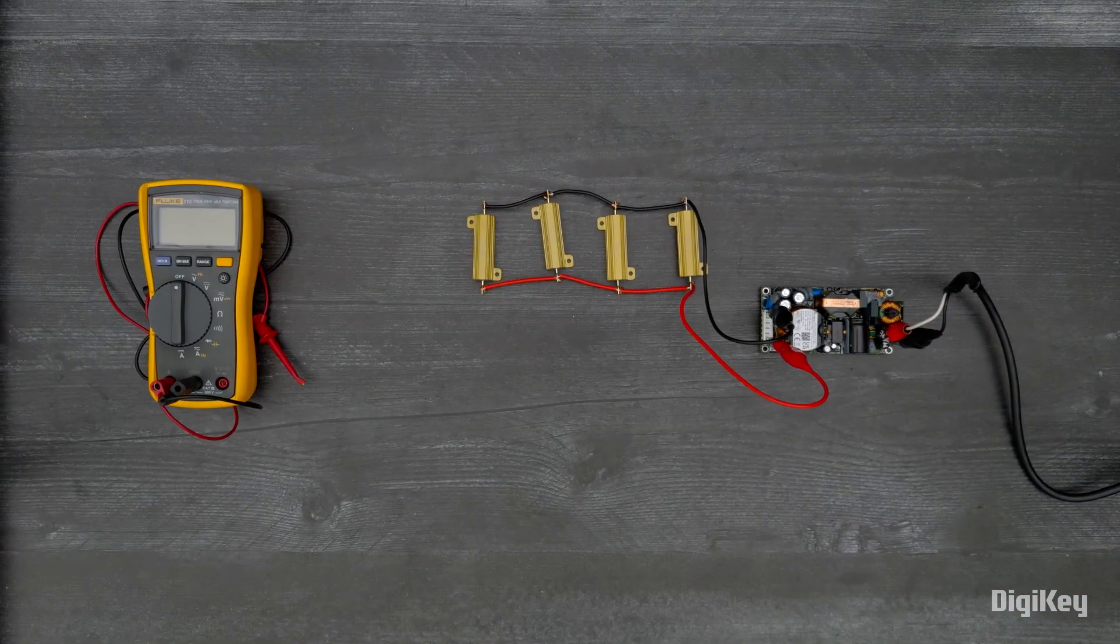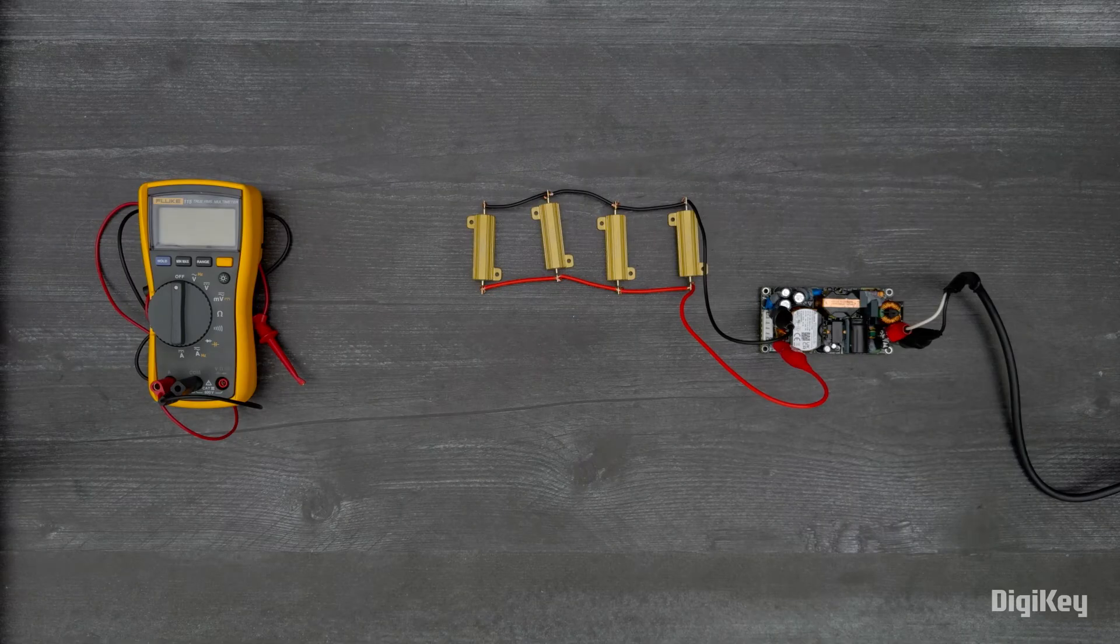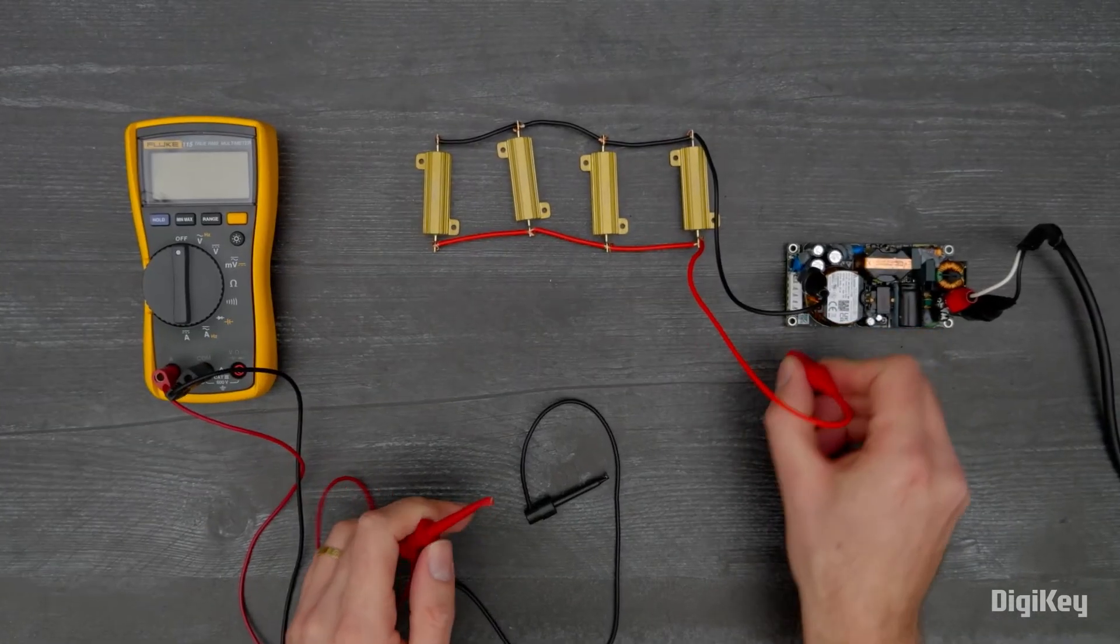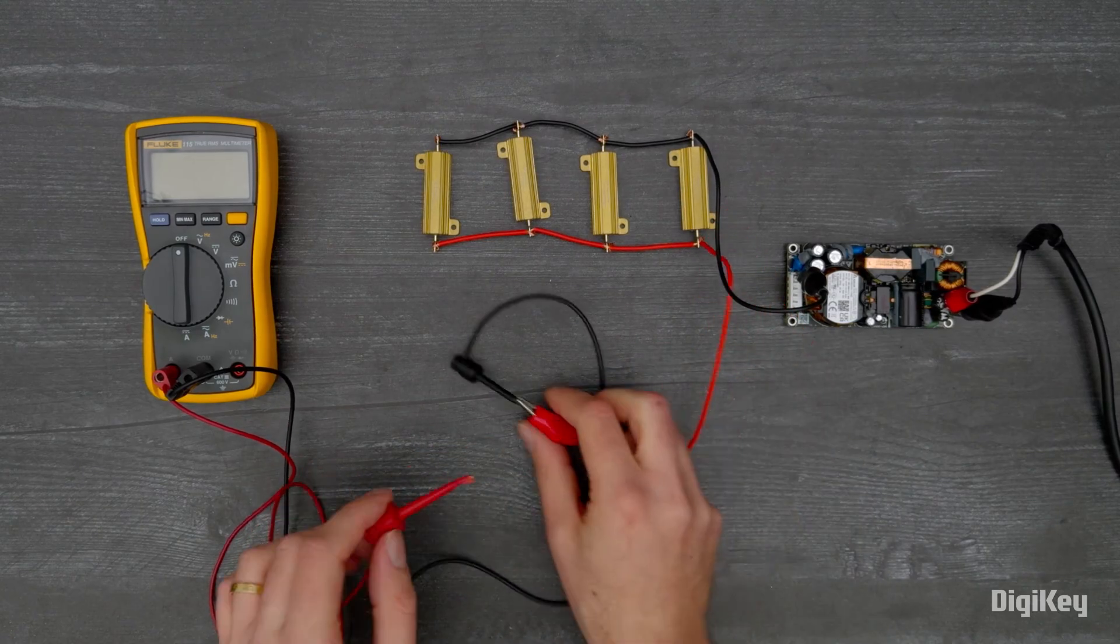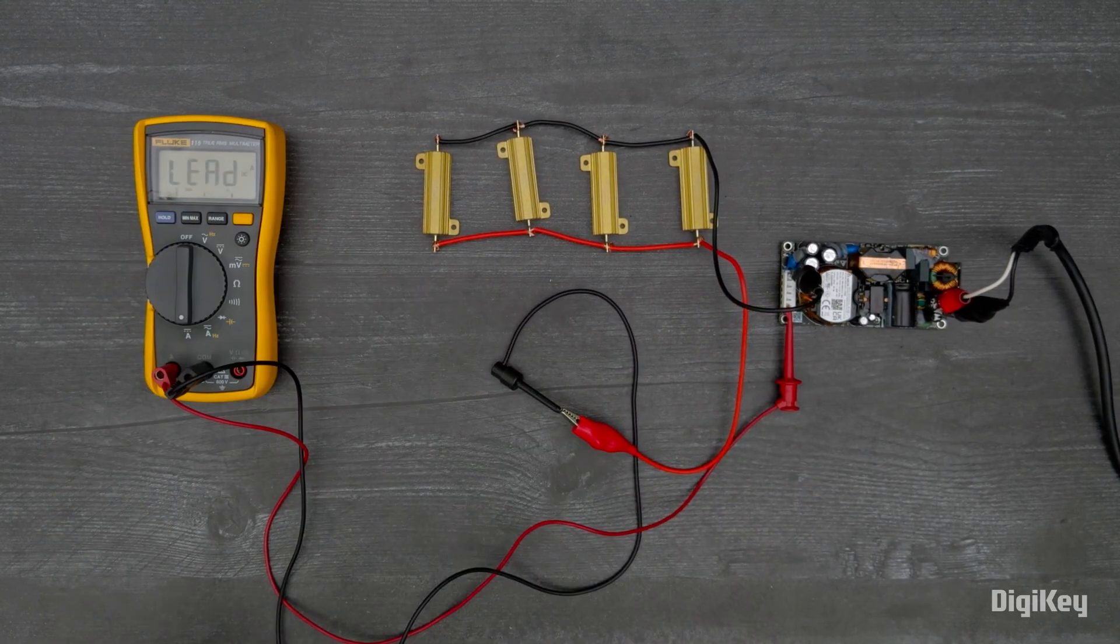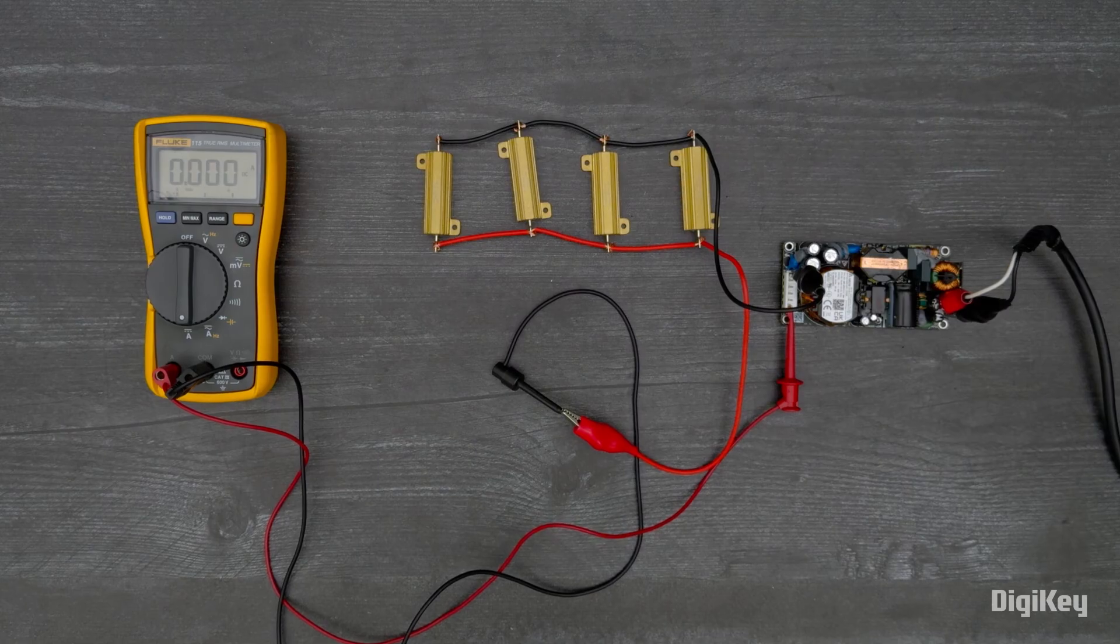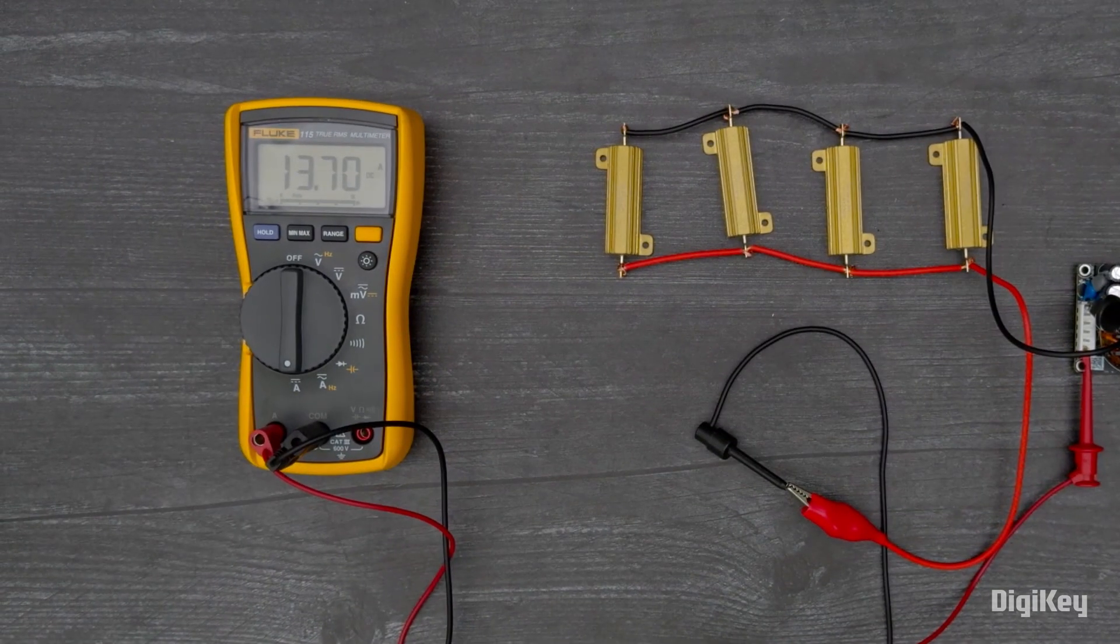To measure the output current, disconnect the input, then disconnect the pin four connection on the output connector. Now connect a DC ammeter in series. Finally, reconnect the input and measure the output at your ammeter.